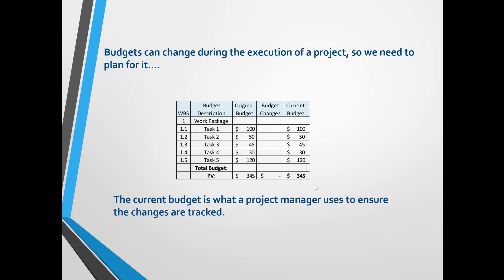Anyone who has executed on a project will know that what you start with as a budget and schedule rarely are the same at the end of the project. There are changes which occur during execution, so we need to take into account the probability that this will occur to the budget. Therefore, I've added two more columns: one for any changes to the budget, and one for the current budget.